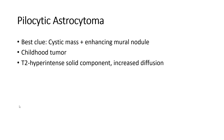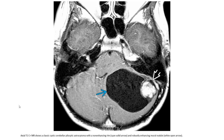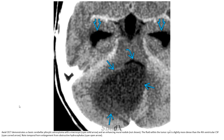Pilocytic astrocytoma presents as a cystic mass with an enhancing mural nodule. It is a childhood tumor with T2 hyperintense solid component and increased diffusion. On axial T1C+ imaging, a classic cystic cerebellar pilocytic astrocytoma is seen with a non-enhancing rim and a robustly enhancing mural nodule, indicated by the solid and open arrows respectively.